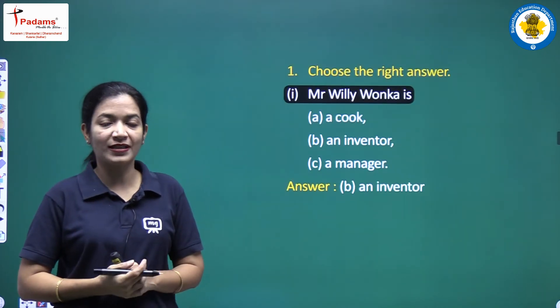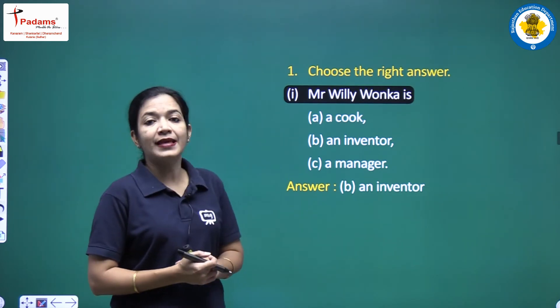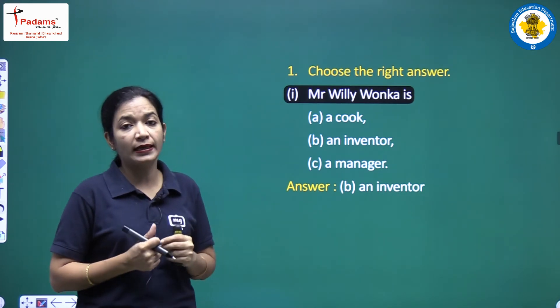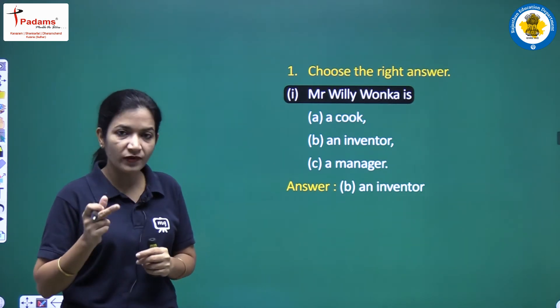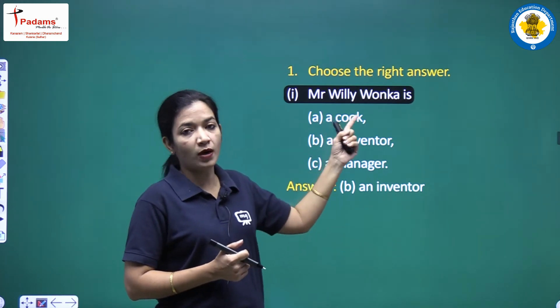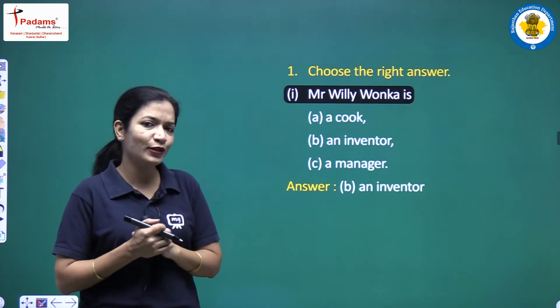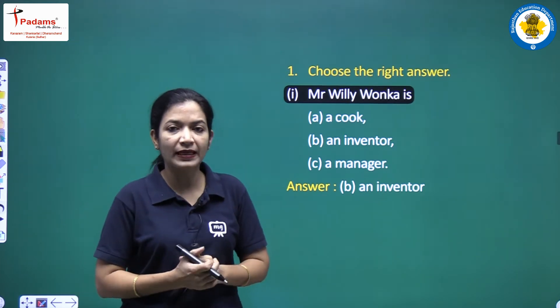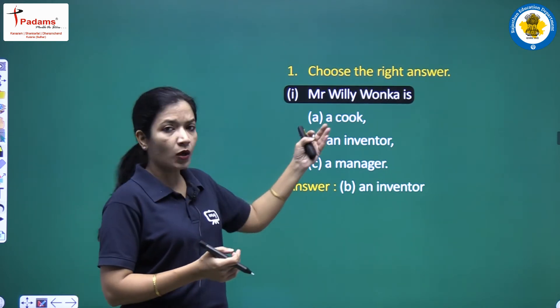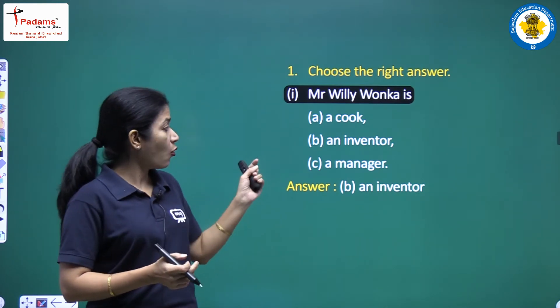We will start with the question answers. The first one is 'Choose the right answer'. We have some options and from these options we have to take the correct one. Question number one: Mr. Willie Wonka is - was he a cook? Was he a cook who cooked food?